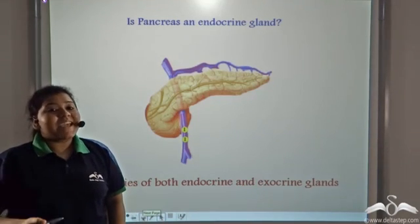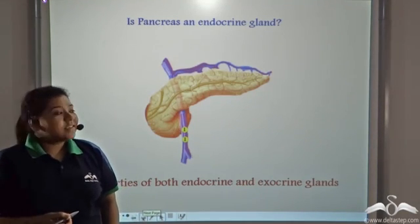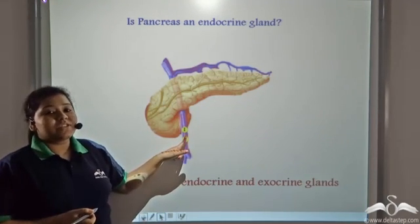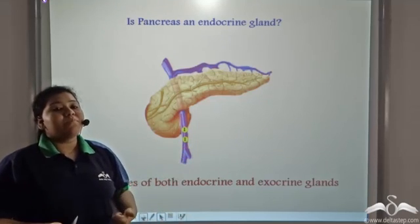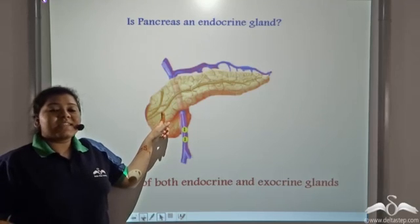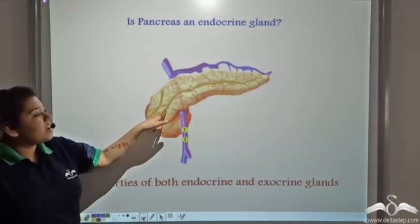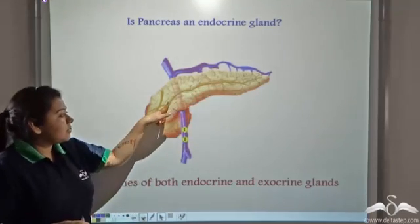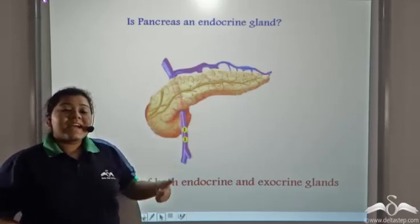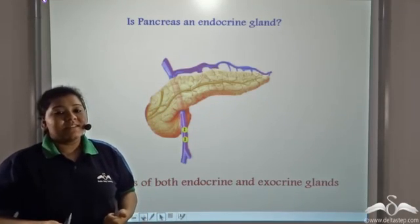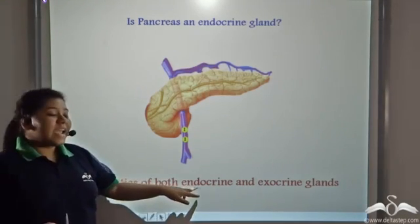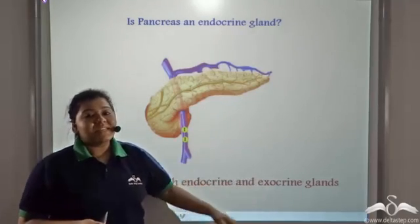Now is pancreas an endocrine gland? Yes, it does secrete insulin and glucagon directly into the bloodstream. So that is an endocrine property of the pancreas. But the pancreas also secretes digestive enzymes via these ducts. So since it secretes enzymes for digestion via ducts, that is an exocrine property. So pancreas is a unique gland that has properties of both endocrine as well as exocrine glands.